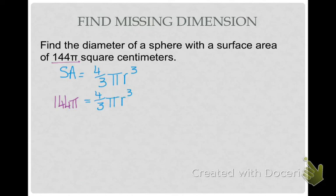And, to solve this for r, because I want to find the radius so I can double it, I'm going to have to get rid of that 4 thirds pi. So, I'm going to divide both sides by 4 thirds pi. On the left, my pi's cancel, and 144 divided by 4 thirds is 108. And, on the right, my 4 thirds pi divided by 4 thirds pi gives me 1, which I'm not going to write down.